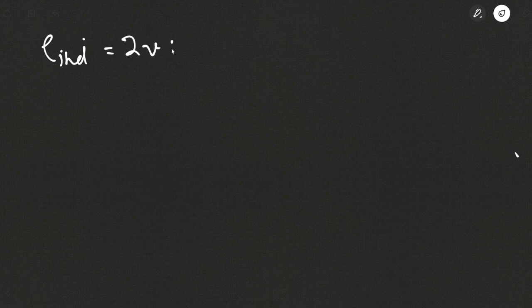Welcome to lecture number three in this series on DC machines. In the previous lecture we derived the formula for induced voltage for a simple rotating loop. E induced is equal to 2VBL. We can also write this as V equal to r omega, where r is the radius and omega is the angular velocity.